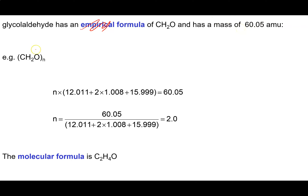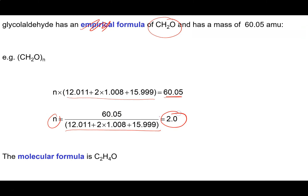N times the empirical formula mass (30.03) equals 60.05. So N is 60.05 divided by 30.03, which gives N = 2. That means everything in the empirical formula gets multiplied by 2, giving us the molecular formula C₂H₄O₂.